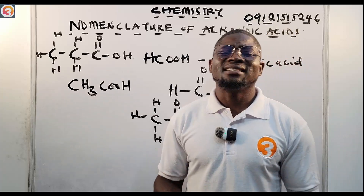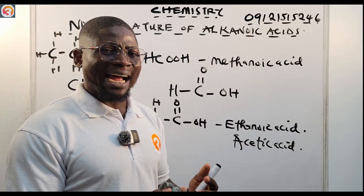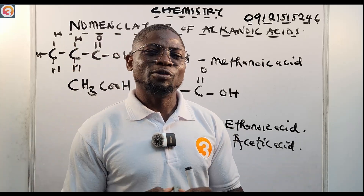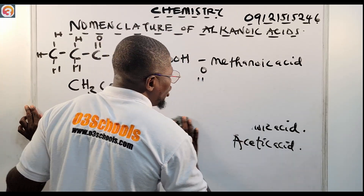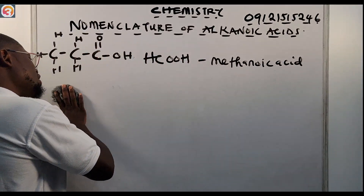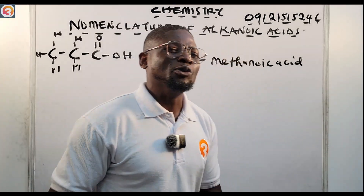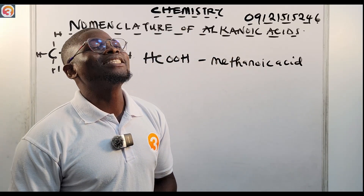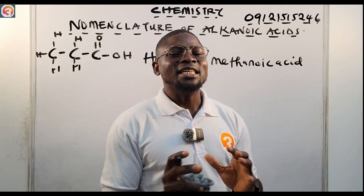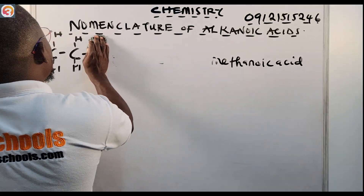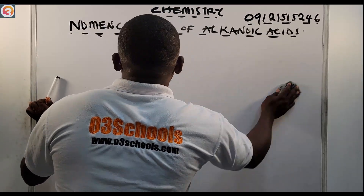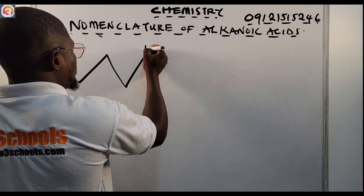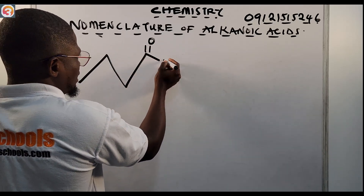Now let us see carboxylic acids that have branches — members that have substituents attached to them. Instead of drawing C-C-C up and down, we are going to continue with our stick form. If you want to name compounds in organic chemistry it is very easy — you just need to practice. After class, write them out and name them yourself without looking at the board.